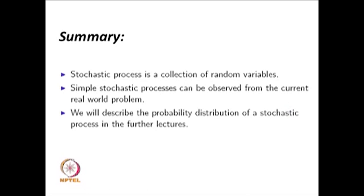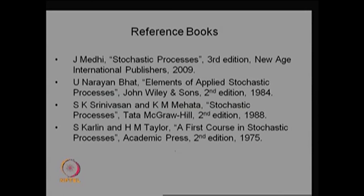In this lecture we have seen what a stochastic process is and how to create one — it is a collection of random variables. We defined the stochastic process, the parameter space, and the state space, and gave the classification of stochastic processes based on these spaces along with real-world examples. More stochastic processes will be discussed in Lecture 2, which will be useful in later stages.